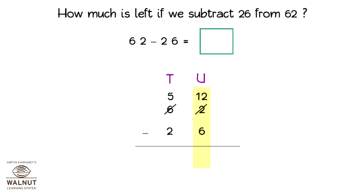We change the values in the tens and units place. Now, we can subtract. We can subtract the units and then we subtract the tens. That gives us the final answer. So, 62 minus 26 is equal to 36.